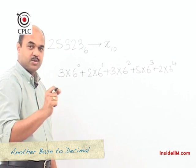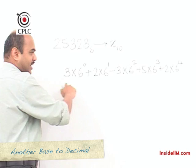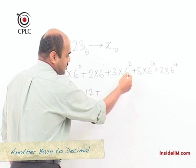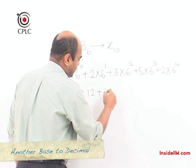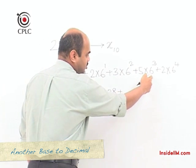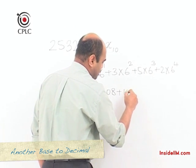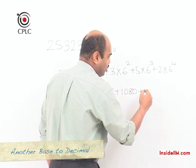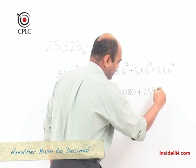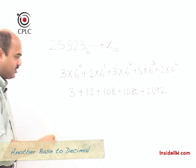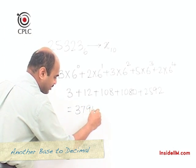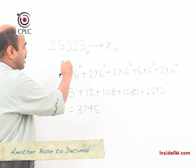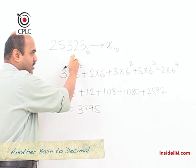This is what we had also learned on the abacus when we were looking at the different digits and corresponding place values. When I now multiply: 3 times 1 gives 3; 2 times 6 gives 12; 3 times 36 gives 108; 5 times 216 gives 1080; and 2 times 1296 gives 2592. Adding all these together gives 3795, which is what we had started with. So converting from any other base into decimal we make use of the multiplication method.